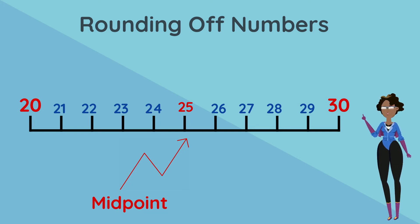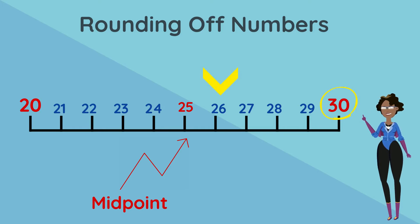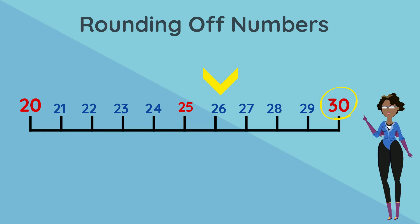Since 26 is after the midpoint, we round up to 30. Therefore, if Mrs. Oliveri has 26 students in her class, she has about 30 students.